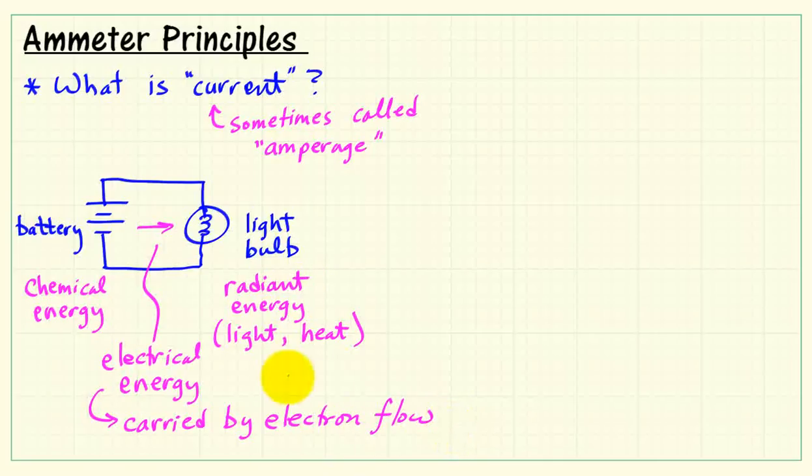Now electrical energy is carried by electron flow, or we could also say that it is carried by charge, and that's what we mean by electrical current. So the way this is put together, we have electrical current flowing in clockwise direction, carrying energy from the battery to the light bulb.